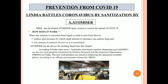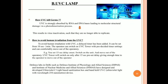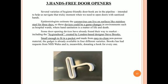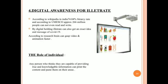An atomizer converts liquid into mist, which can be used with a lesser amount of sanitizer. There is also a UV lamp that uses UV radiation against the virus. Another device is like a mask — it prevents the entry of the virus and kills it on surfaces. Finally, there is an easy door opener that can open all types of doors.